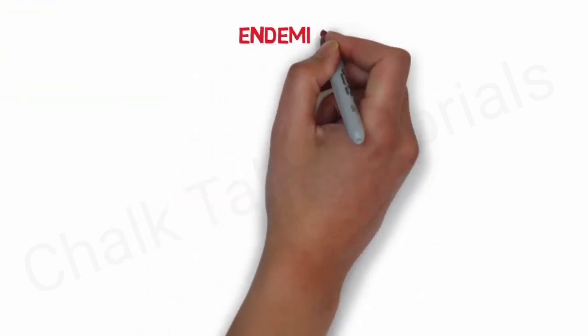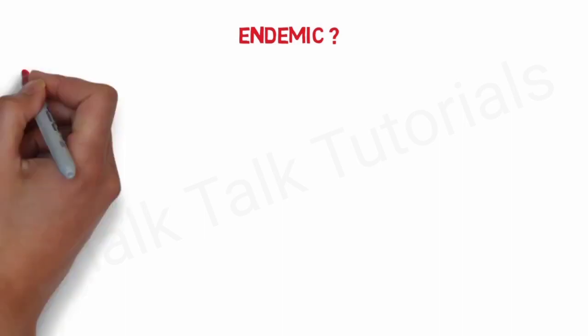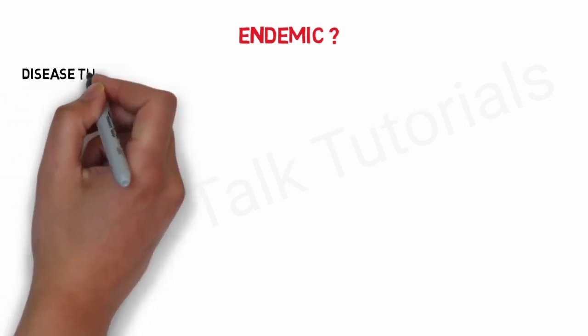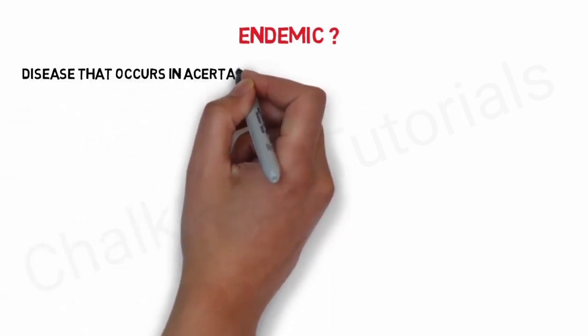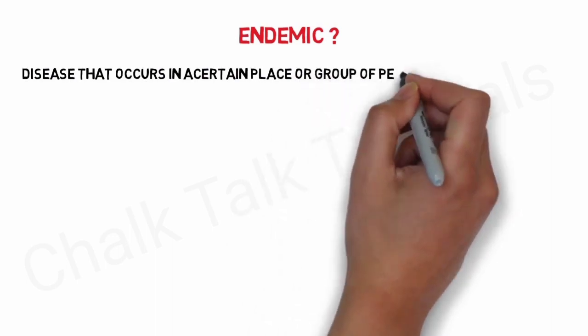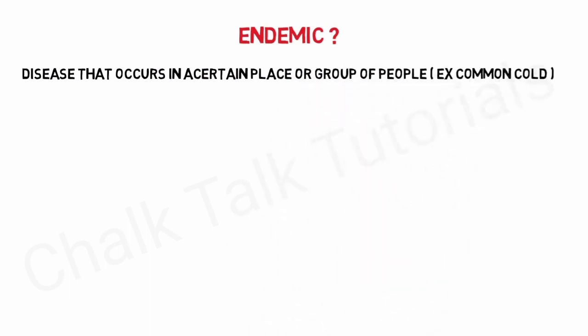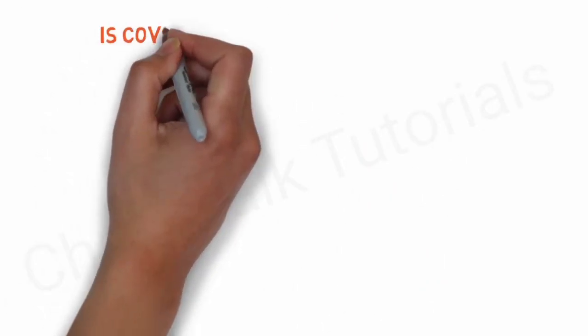Next, we have endemics. What is endemic? A disease can be described as endemic when it occurs in a certain people or group of people. For example, the common cold.